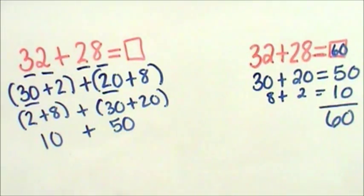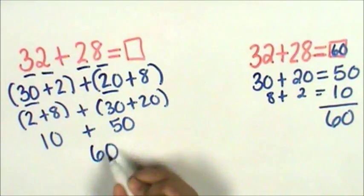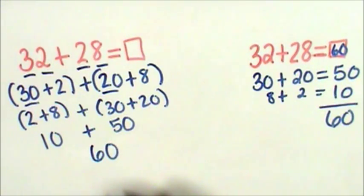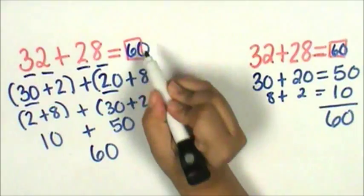I have ten plus fifty or fifty plus ten and that is equal to sixty. Thirty-two plus twenty-eight is sixty.